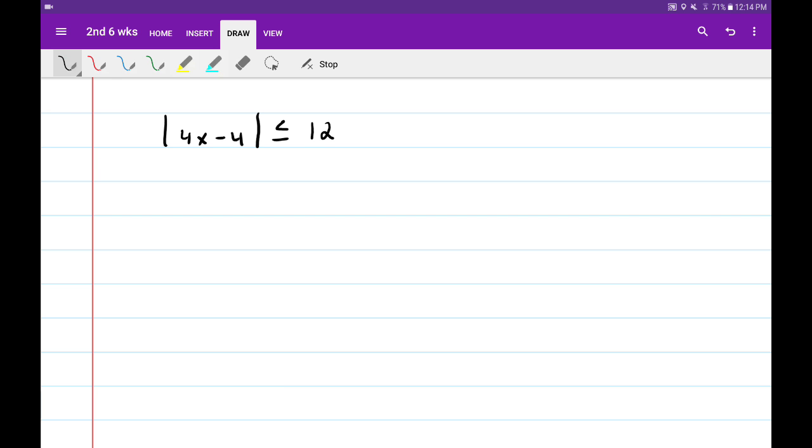All right. So let's go ahead and apply the KISS method since it's already absolute value. So I'm going to rewrite the inequality without the absolute value bars. Since it's between, I'm going to put and. And then I'm going to apply the KISS method next.